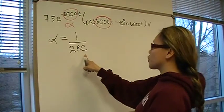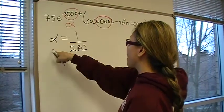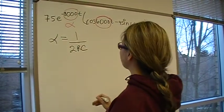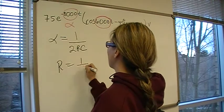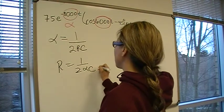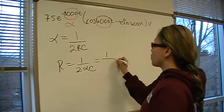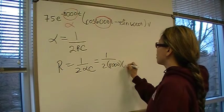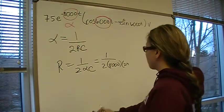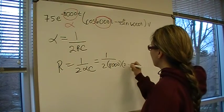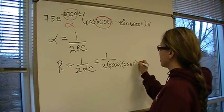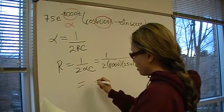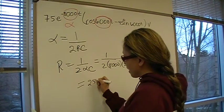We have alpha equals 1 over 2RC. Well, now we have the capacitance, it's 25 nanofarads. It's an algebra problem at this point. R is going to equal 1 over 2 alpha C, and that is going to be 1 over 2 times 8,000 times 25 nanofarads. Put that into your calculator, and you should come up with a resistance of 2,500 ohms.